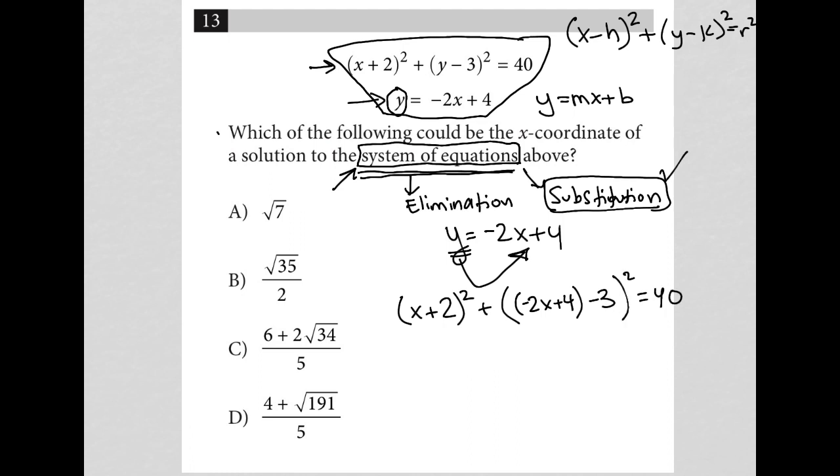Now I have a single equation that only has x values involved. So when I simplify this further, I'm going to actually keep this the same for right now, (x+2)². When I get over here, I have -2x + 4 and minus 3 is 1. So I'd have (-2x + 1)² = 40.